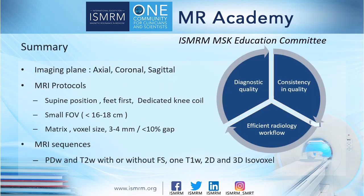In summary: imaging planes include axial, coronal, and sagittal. MR protocols require a dedicated knee coil with a small FOV, typically less than 16 or 18 cm. Slice thickness is usually 3 or 4 mm with less than 10% slice gap. The patient is usually in the supine position. MR sequences consist of proton density-weighted and T2-weighted images with or without fat suppression, one T1 axial, and 2D and 3D isotropic voxel imaging. Again, this is not a rigid rule or standard for practice and is not designed to establish a legal standard of care. Thank you.